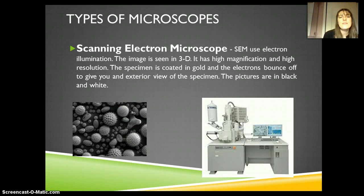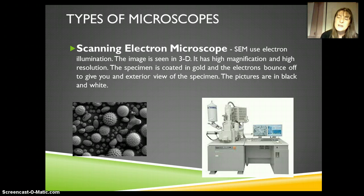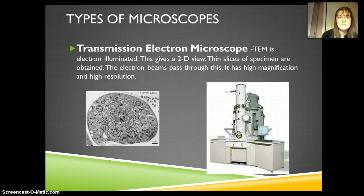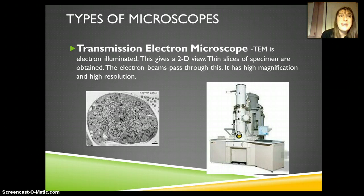Then we have our electron microscopes. The previous three were all light microscopes; the next two use electrons to bounce around and focus things. The first type is a scanning electron microscope — it takes images in 3D but only of the surface. You have to coat everything in gold before you can take a picture, so it becomes pretty expensive. Finally, the transmission electron microscope is also based on electrons. It gives you a two-dimensional view and you have to cut things very, very thin because the electrons have to be able to go through the sample to take the image.